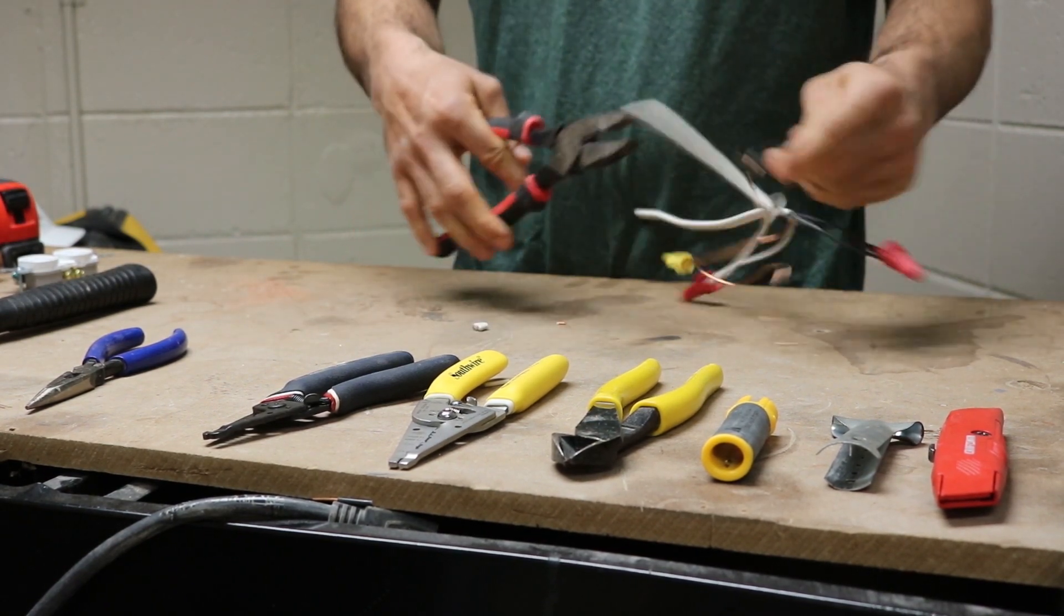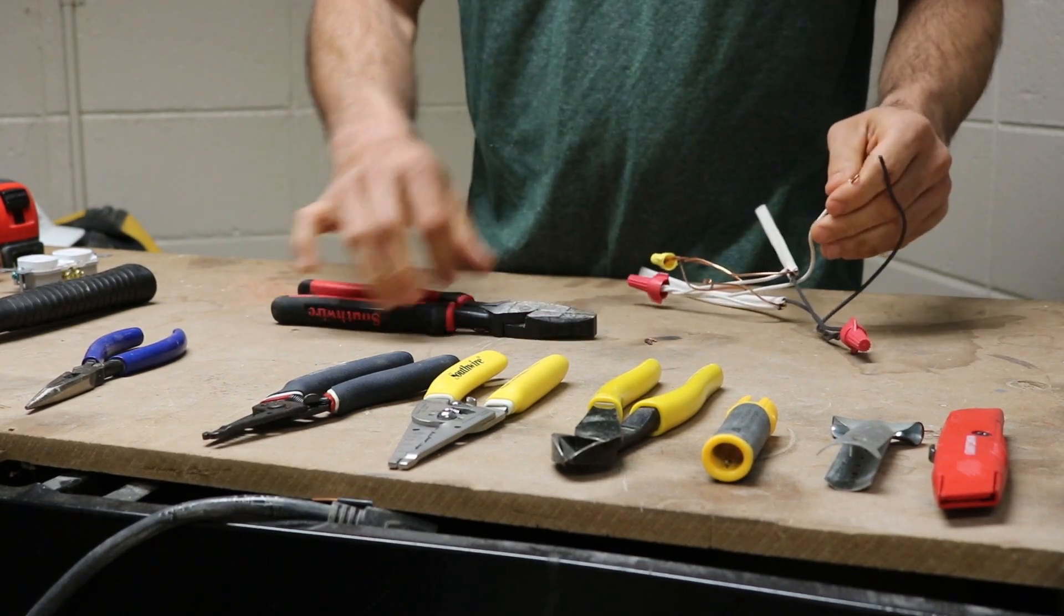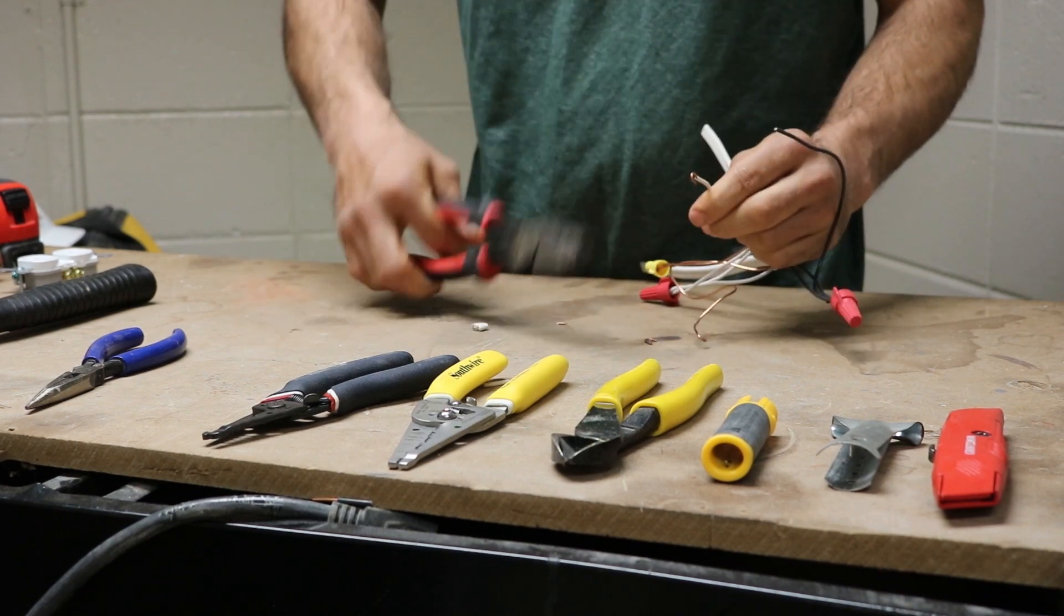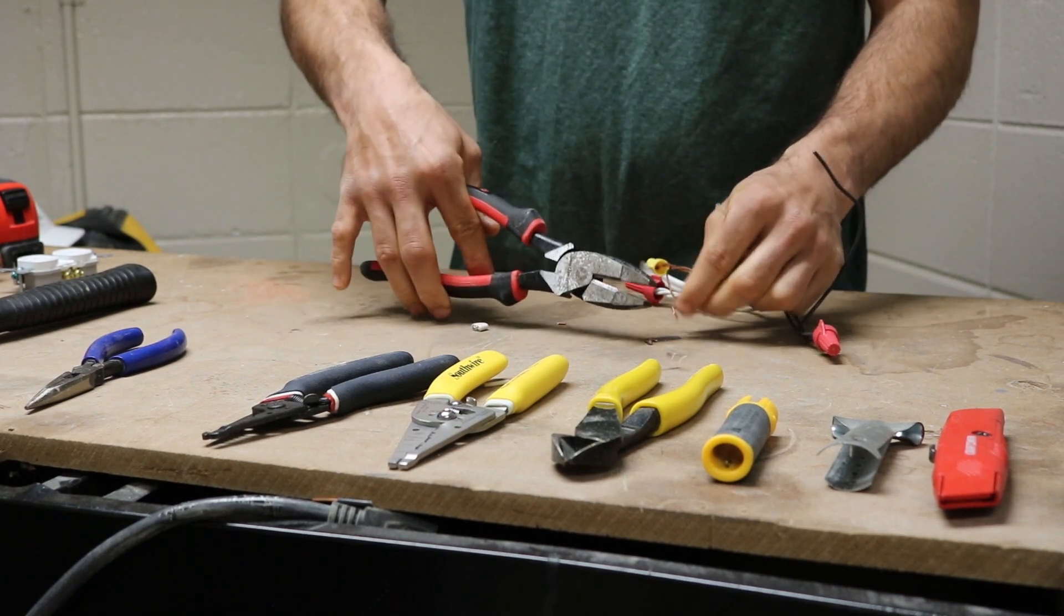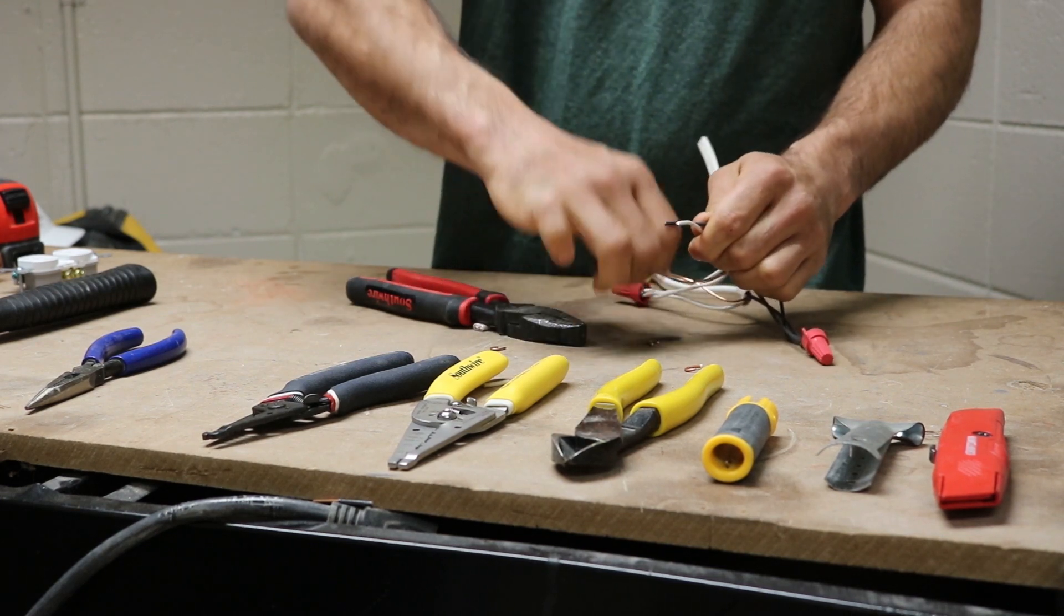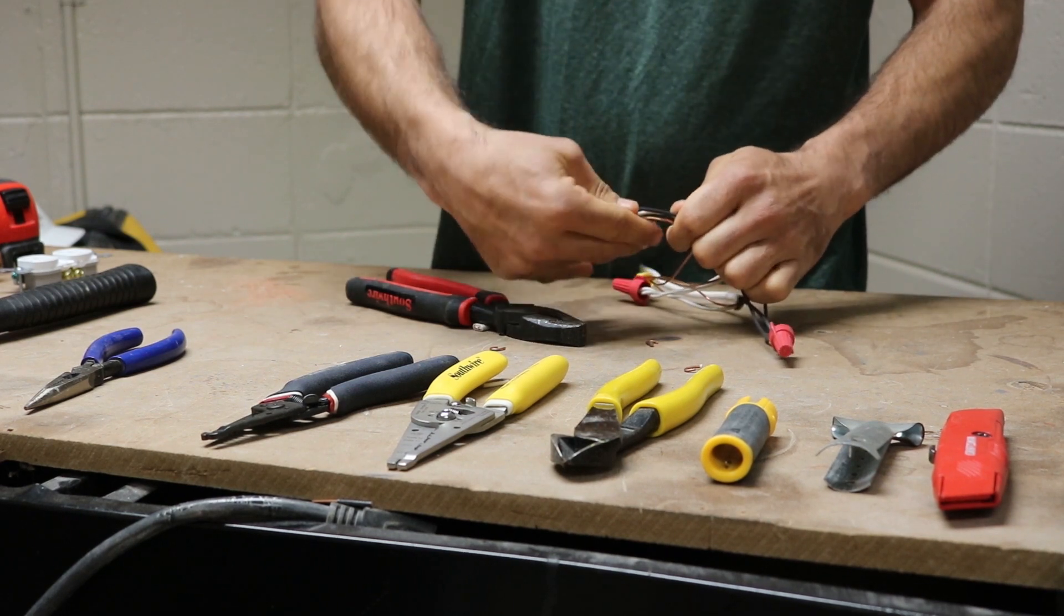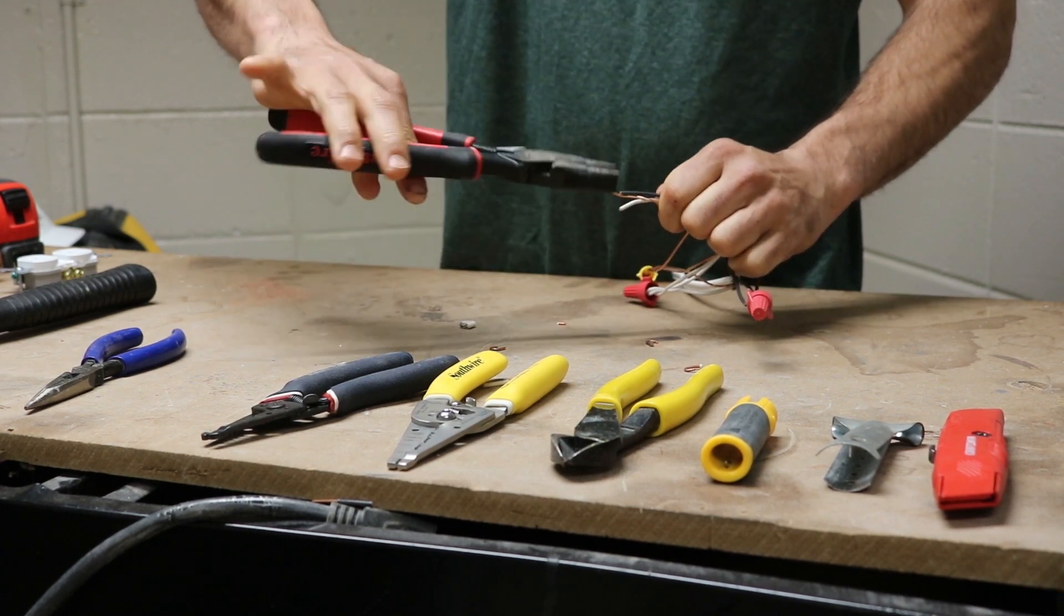But they can also cut individual wires. They also can grip right here. So if you need to do what they call making taps, and you need to tap multiple wires together, you could grab all of these wires right here and tap them together using the pliers part of your lineman's.